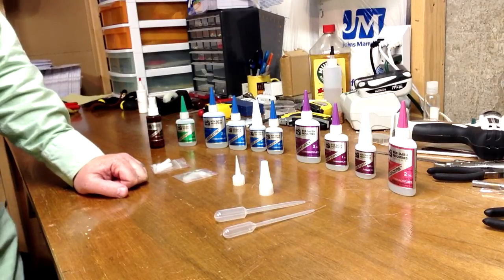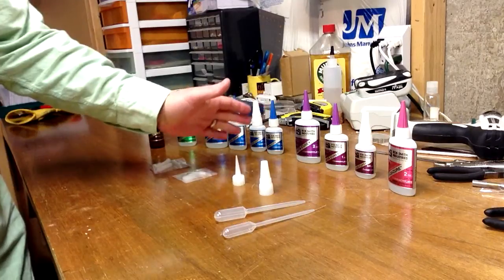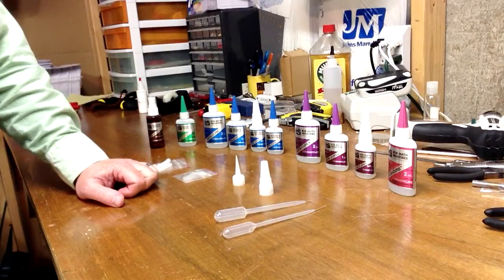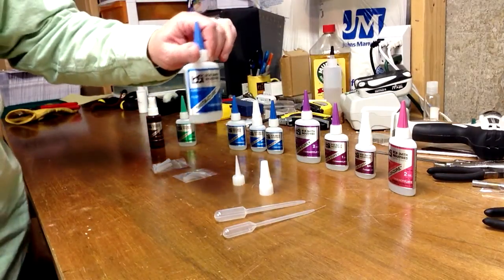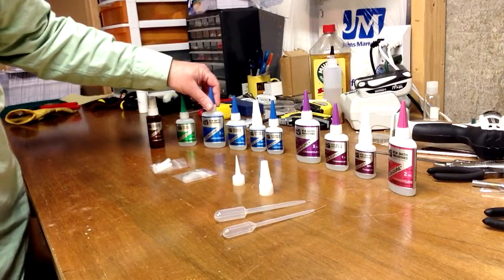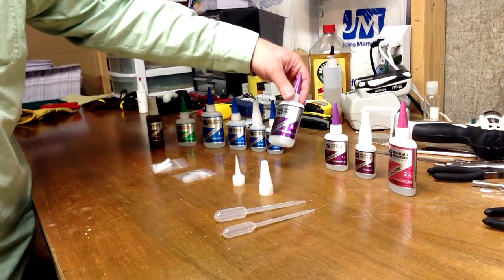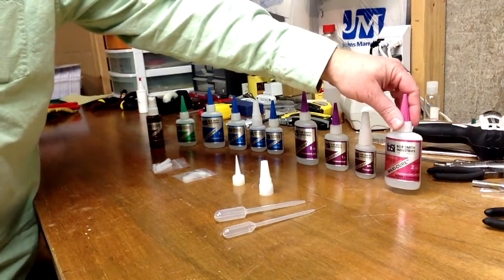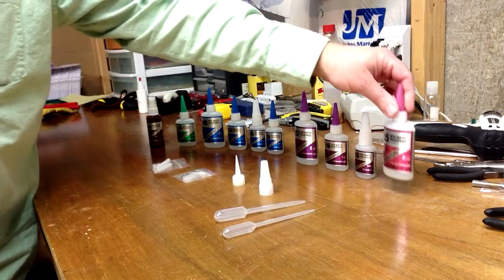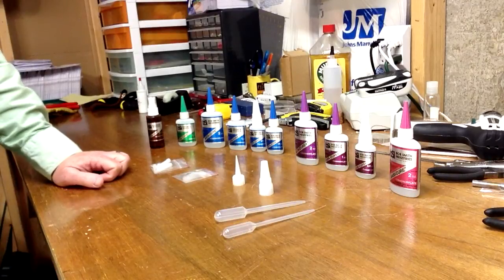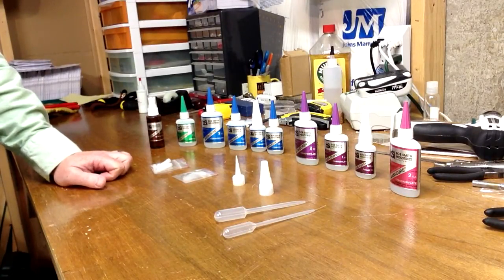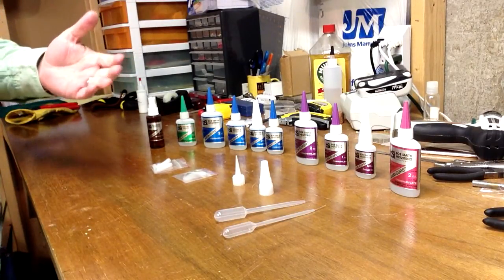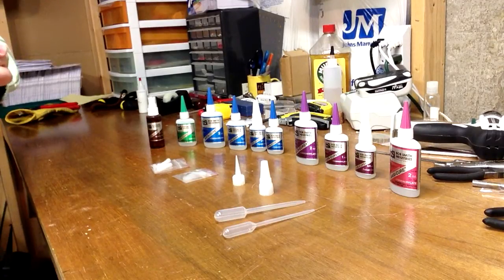Things that you need a little bit thicker glue. Now of course, the thicker of the versions that you use, the longer set time. The super thin says one to three seconds, so it sets quite quickly. The gap filling or medium viscosity says five to fifteen seconds, and then the thick version, that's the thickest, and that says 10 to 25 seconds. As you get into the thicker glues it's going to set longer. As you can see, we're just talking about seconds, so it's not like we're talking about 30 minutes to set or anything like that because CA glue sets very quickly.